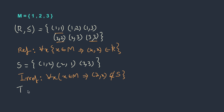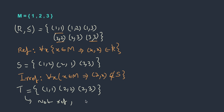Let's take another relation T with (1,1), (2,2), and (2,3). Is it reflexive? For 1 we have (1,1), for 2 we have (2,2), but for 3 there is no (3,3). So this is not reflexive. Does this mean it is irreflexive? Irreflexive says there should not be any (x,x) at all, but (1,1) and (2,2) are already there. So this is not even irreflexive. If a relation is not reflexive, it doesn't mean it is irreflexive — it can be neither.